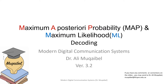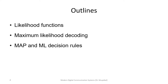Hello everybody, this is Dr. Ali Mughevel. Today we cover MAP, Maximum A Posteriori Probability, and Maximum Likelihood Decoding. The outline goes like this: we will start with the likelihood functions, maximum likelihood decoding, and we'll look at the decision rules for the case of MAP and ML, Maximum A Posteriori Probabilities, and the maximum likelihood decision.